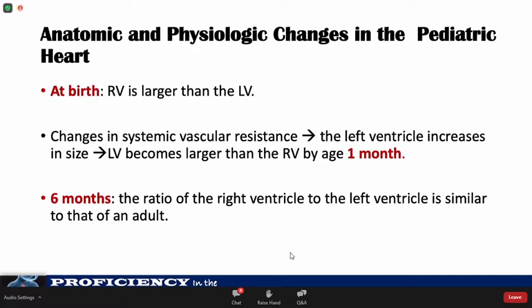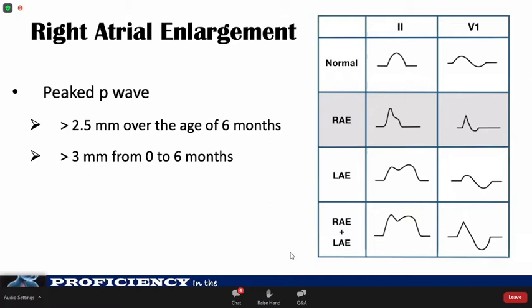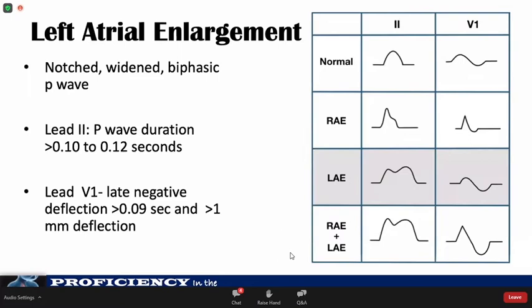The criteria for right atrial enlargement include the presence of a peaked P-wave in lead 2. The upper limit of normal for P-wave amplitude is 2.5 mm after 6 months of age and 3 mm from 0 to 6 months. This can be accompanied by a biphasic or tall P-wave in the right chest leads. The criteria for left atrial enlargement include a broad notched P-wave in lead 2 with P-duration of more than 0.10 to 0.12 seconds, and a deep, slurred, biphasic P-wave in V1, particularly when the terminal negative component is broadened. Biatrial enlargement is considered present when signs of both right and left atrial enlargement are present.